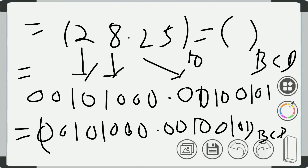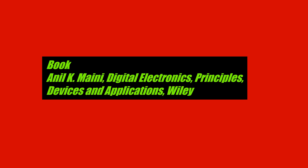That's all about converting the binary number system which is in a fraction into its equivalent BCD code. I think you have now understood how to convert the binary fraction number into its equivalent BCD code. You can take any binary fraction number and convert it into its equivalent BCD code. Thank you.